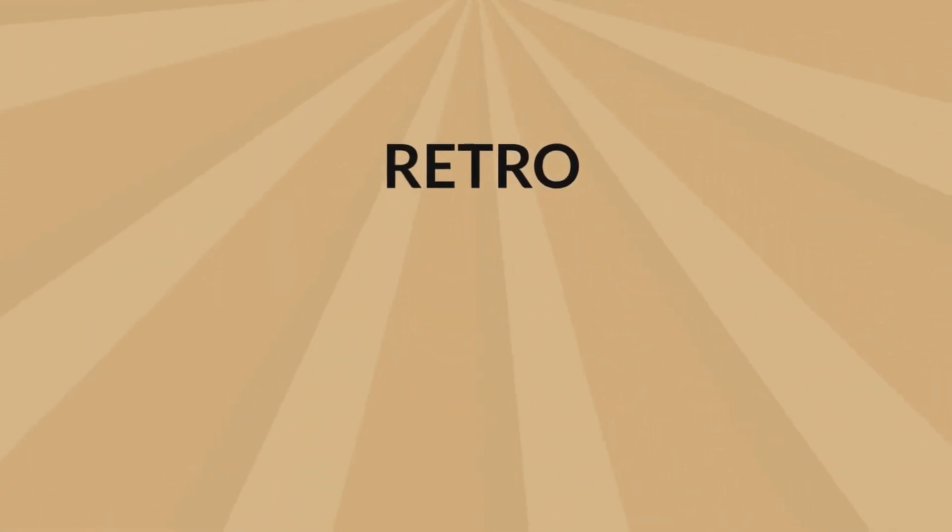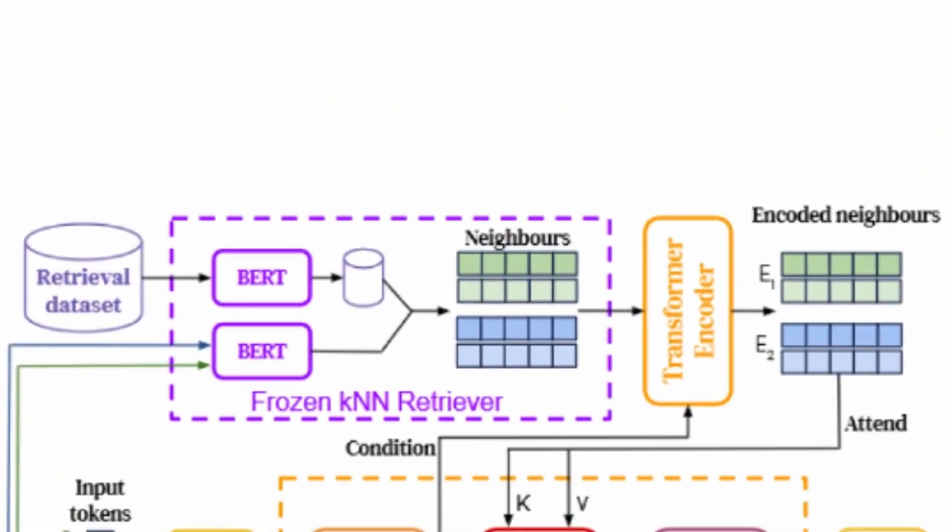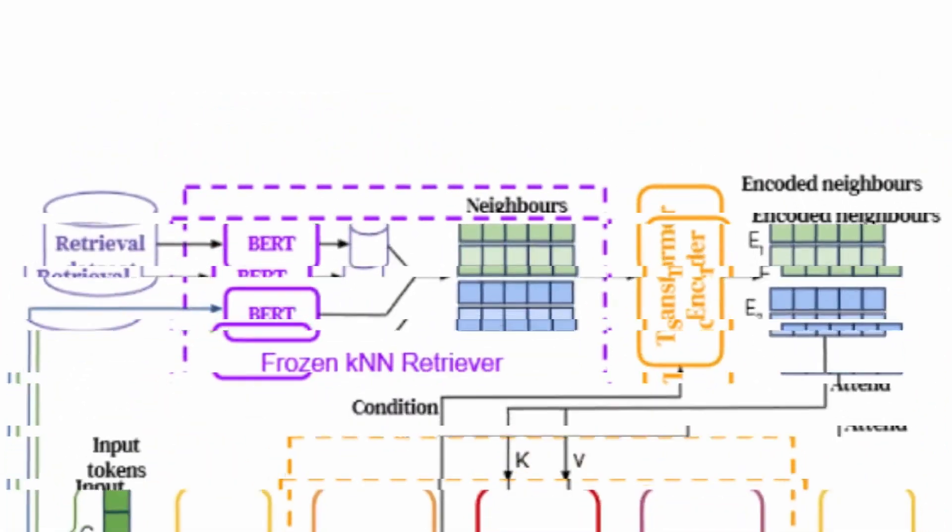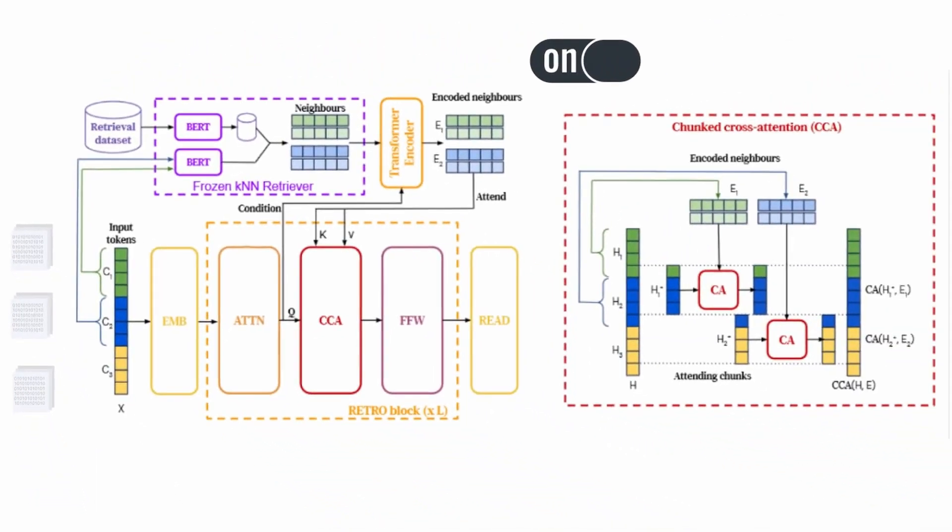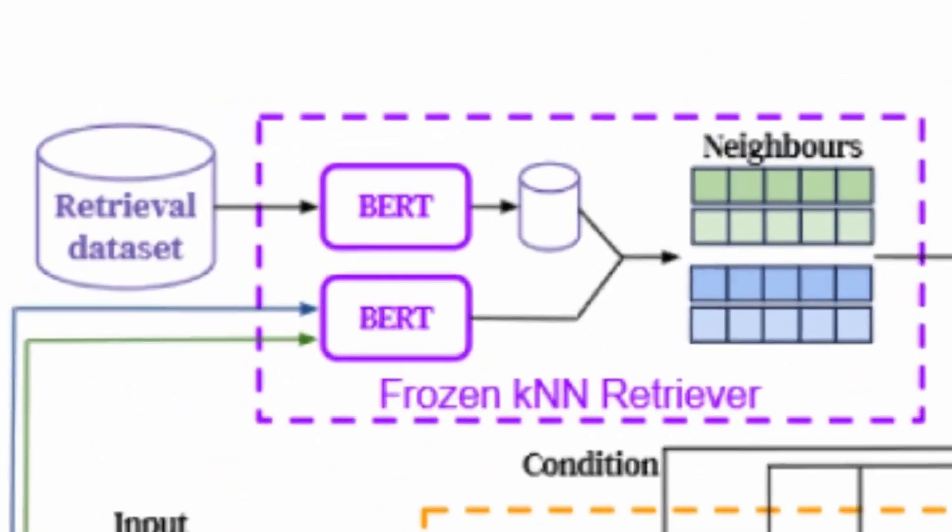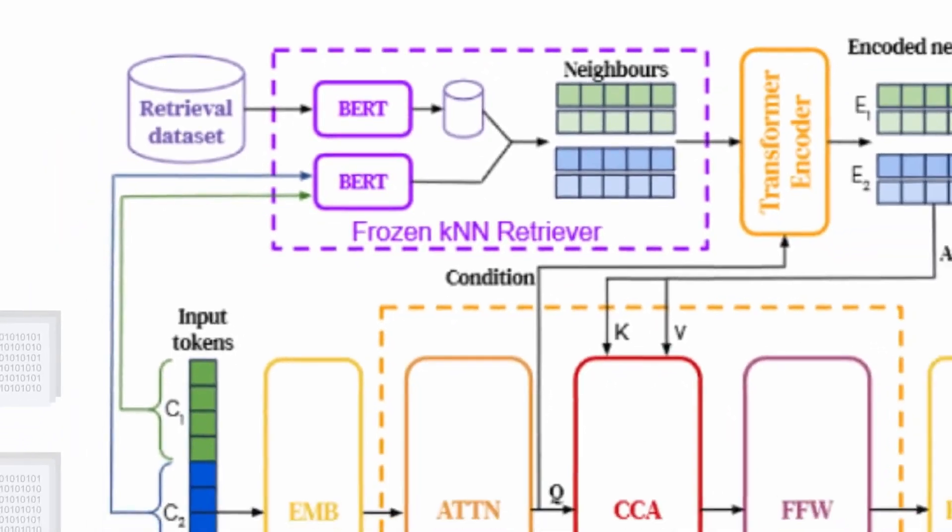The Retro, Retrieval Enhanced Transformer model, as introduced by Borgeaud et al., represents a significant advancement in autoregressive language models. Retro innovates by conditioning the generation of tokens on chunks of text retrieved from a massive two-trillion-token dataset, effectively enabling the model to leverage a broader context during the training phase. This mechanism utilizes a frozen, BERT-based K-nearest-neighbors retriever to identify relevant document chunks based on their semantic similarity to the input.